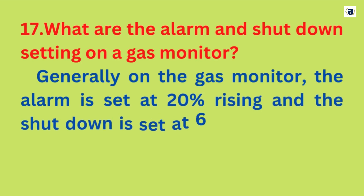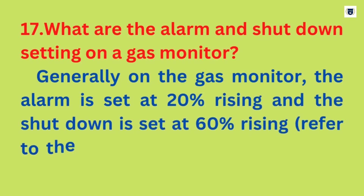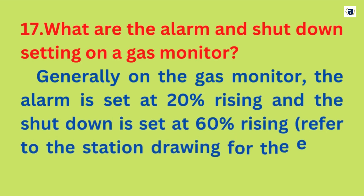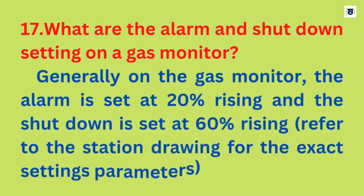What are the alarm and shutdown settings on a gas monitor? Generally, the alarm is set at 20 percent rising and the shutdown is set at 60 percent rising. Refer to the station drawing for the exact settings and parameters.